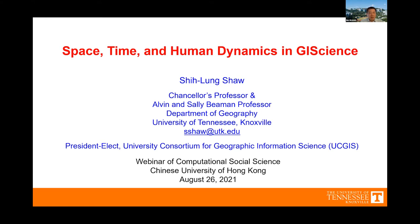He also received the Outstanding Scholar Award in Regional Development and Planning from the Association of American Geographers. He is an elected Fellow of the American Association for the Advancement of Science (AAAS) and the President-Elect of the University Consortium for Geographic Information Science (UCGIS), so he will be the president from next year. Without further ado, Professor Shaw, please.